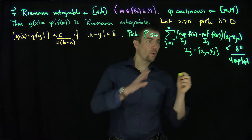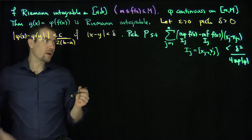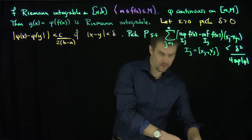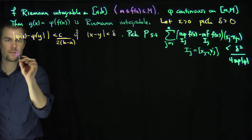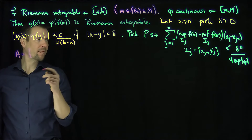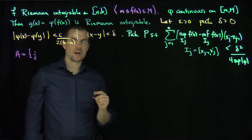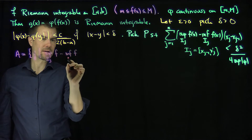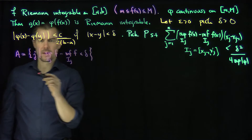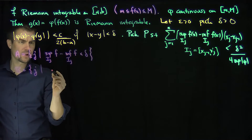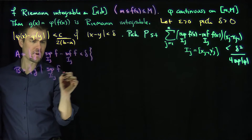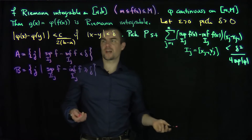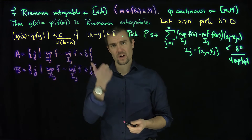Now I'd like to make a couple of observations. I'm going to break the index set {1,...,n} into two sets. Set A is the set of j such that sup(f on I_j) - inf(f on I_j) < delta, and set B is the set of j such that sup(f on I_j) - inf(f on I_j) >= delta. So either the oscillation in I_j is less than delta or it's bigger than or equal to delta.